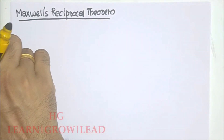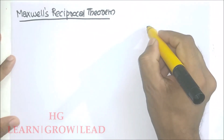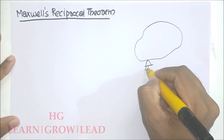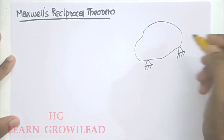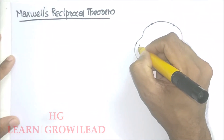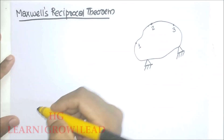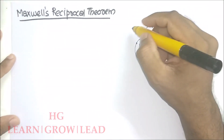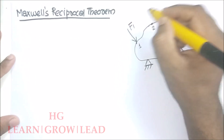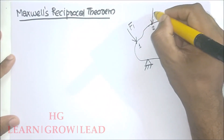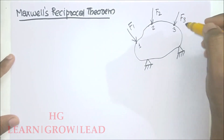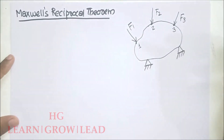Here, we are going to consider a three-dimensional elastic solid. We are going to consider one body. In this body, we are going to consider points one, two, and three. We are applying a force F1 at point one, a force F2 at point two, and another force F3 at point three, and so on for n number of forces.